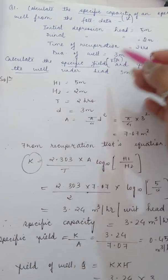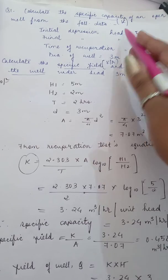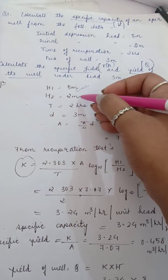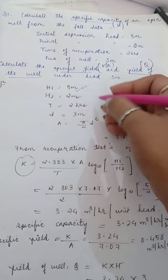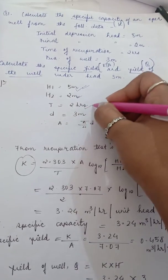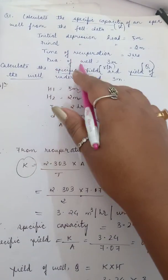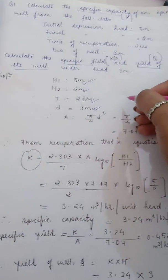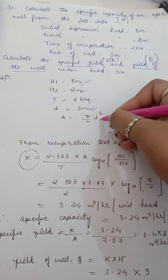Now first we'll write the given data. Initial depression head h1 is 5 meters, final depression head h2 is 2 meters, time of recuperation is 2 hours, diameter of well d is 3 meters.